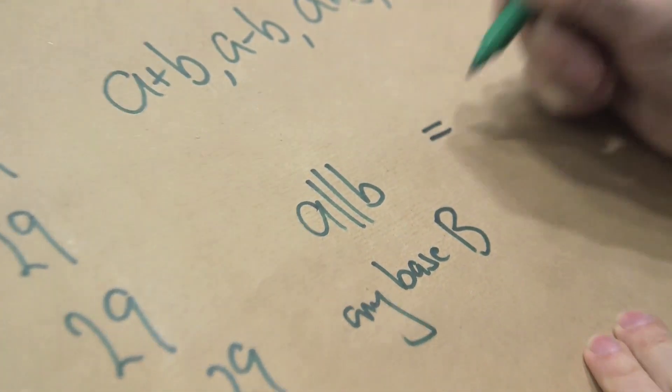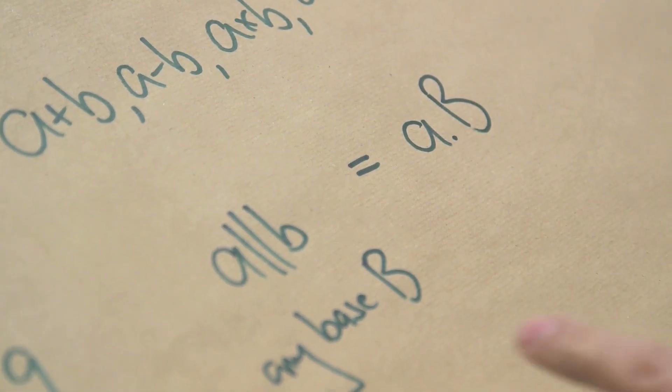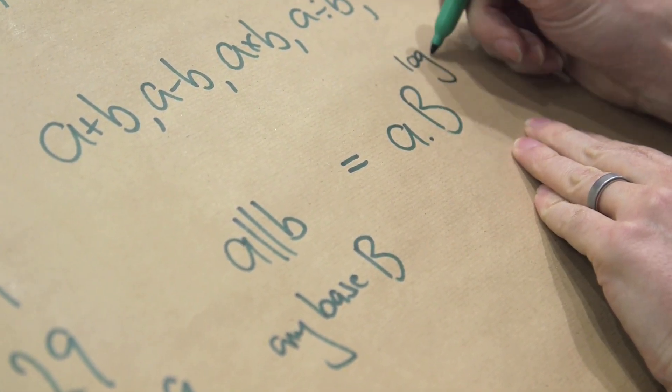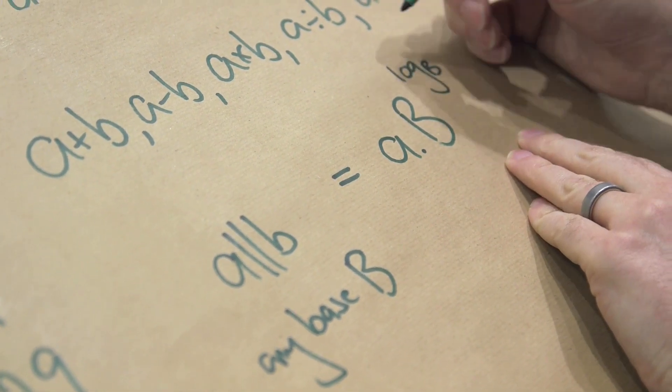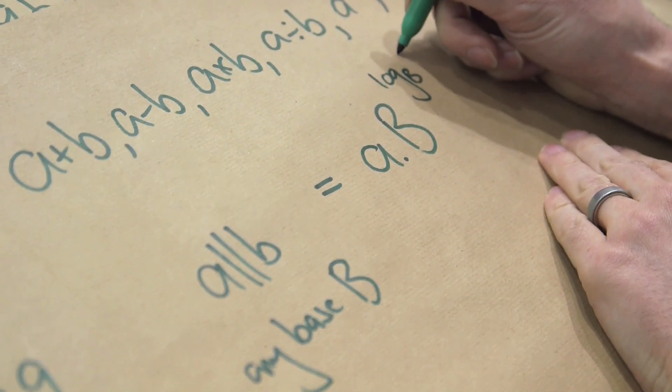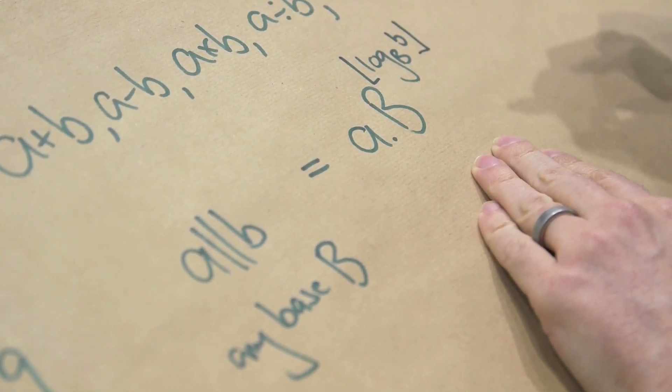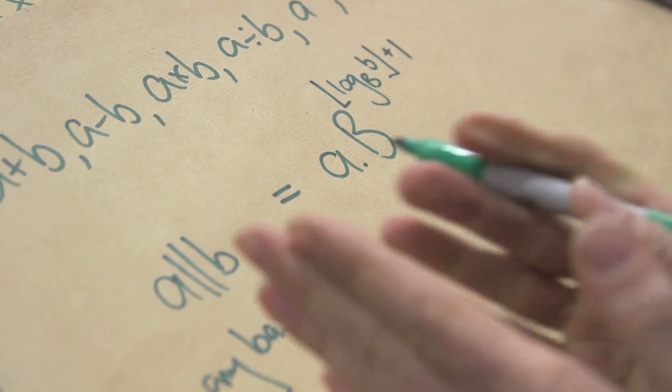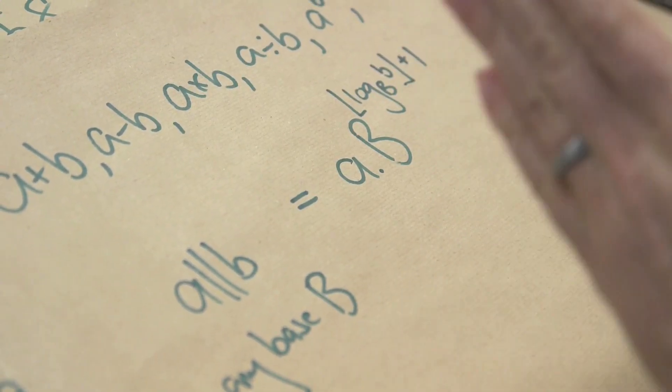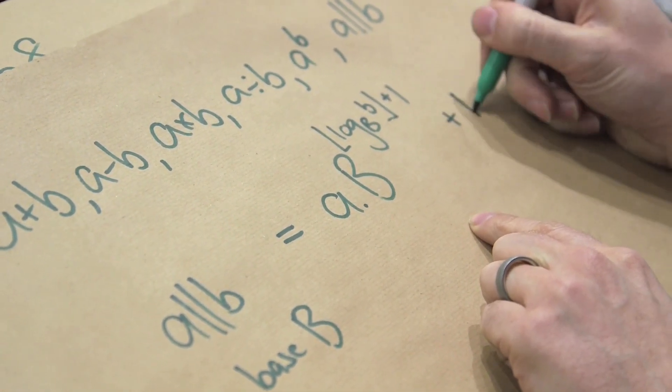it equals A times that base, how do we work out the length of something? Well, you use a log, right? So it's log base whatever the base is of your next number, coming up over here, B, you've then got a floor function, so you round it down to the nearest whole number, and you add one. That's just because the log will give you, if you round it down, one less than the number of digits in that number, in that base. And then you add on B.